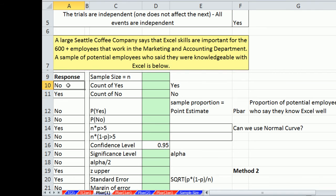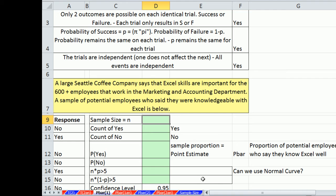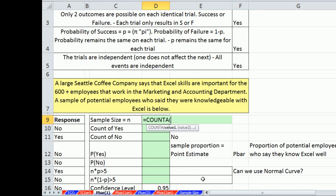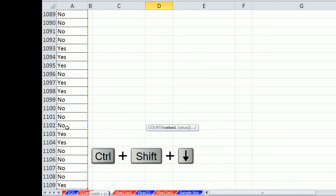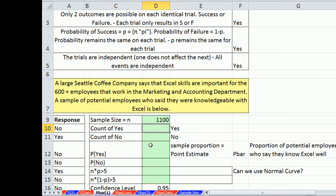All right, here's our data set here. I'm going to Control-Shift down. So there's, wow. Calculate our sample size, so equals count. Now count counts numbers, and count a counts non-empty cells. And since we have words here, we want to count how many cells have words in them. So we use count a.